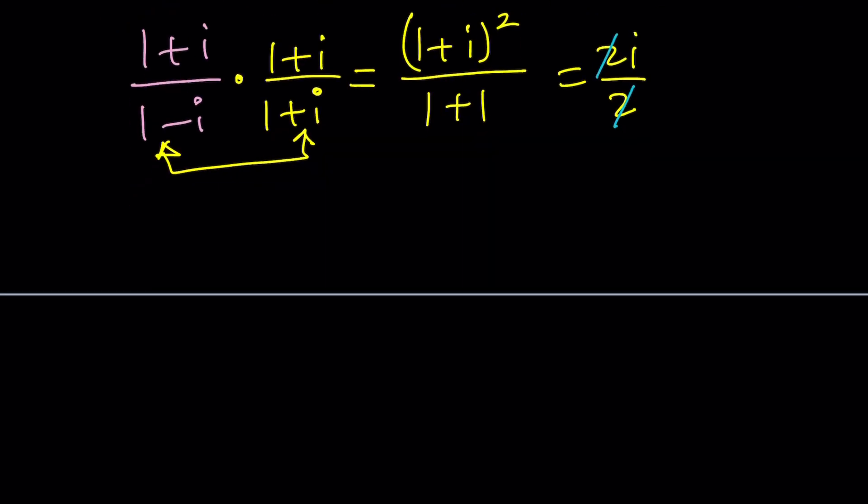So kind of hard to believe, but 1 plus i divided by 1 minus i is equal to i. You can verify this because if you multiply 1 minus i by i, you get i minus i squared, but i squared is negative 1. So negative i squared is positive 1. So this becomes i plus 1 or 1 plus i. You could also manipulate this, and we've done a similar problem just recently. Remember? Okay, great. The one with the cosine sign. Look it up.